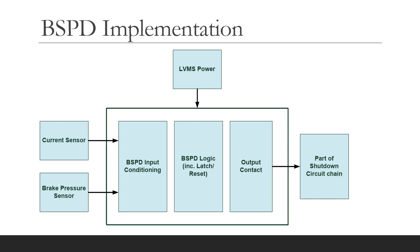I'm not going to design the BSPD for you, but here is a typical arrangement. We've got a current sensor representing the power and some form of brake pressure sensor, with input conditioning circuits and comparators which feed combinational logic. There's a reset and latch within that, and it goes to a volt-free contact which is part of the shutdown circuit chain.